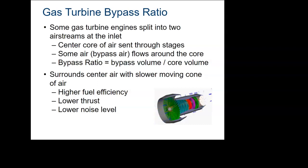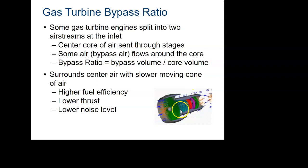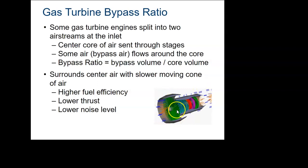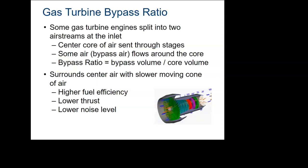Now let's talk about turbofans. An important concept here is bypass ratio. A turbofan has a turbojet core — with compressor, combustor, turbine, and nozzle — but also has a fan in the front. The amount of air that goes through the fan and around the engine core, divided by the amount of air that goes through the core, is called the bypass ratio. That's something you'll definitely need to know when designing a jet engine.